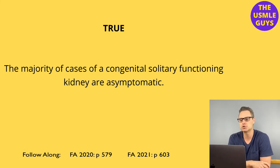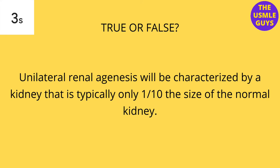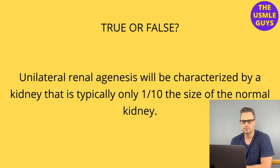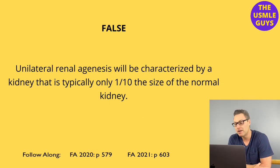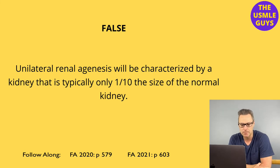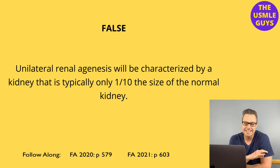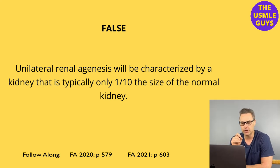Let's do the next question. This is false. When the ureteric bud fails to develop an induced differentiation of the metanephric mesenchyme, we don't get a smaller kidney — we get a complete absence of both the kidney and the ureter.